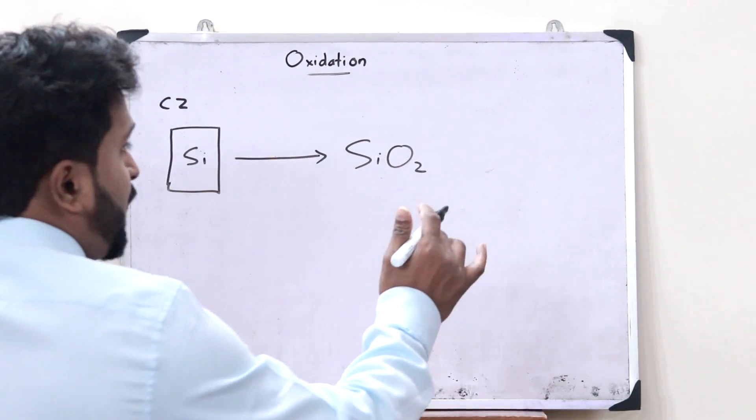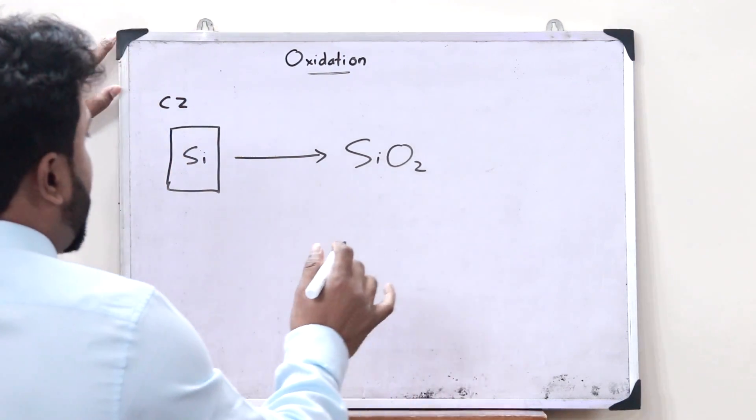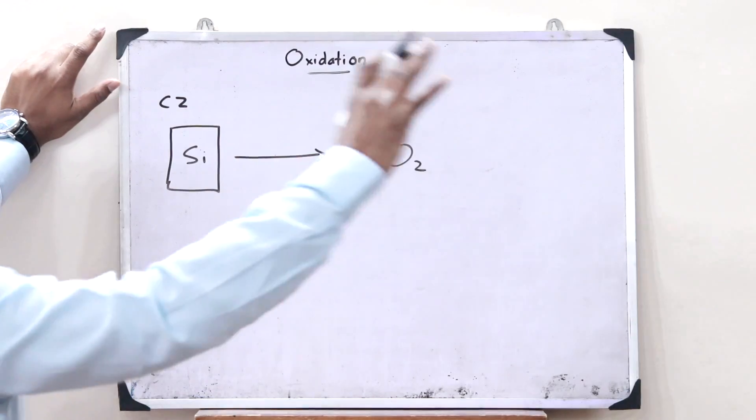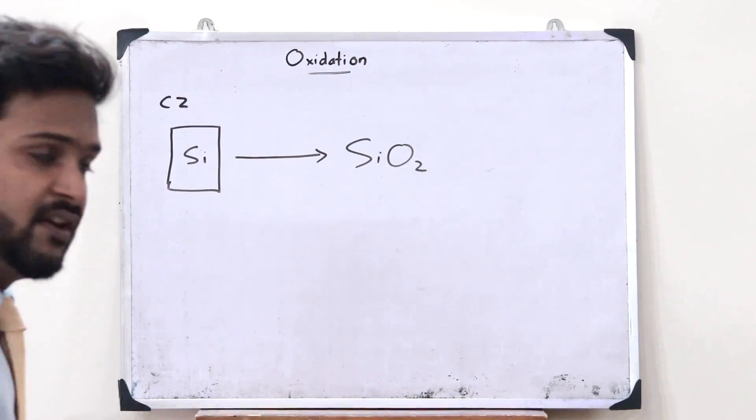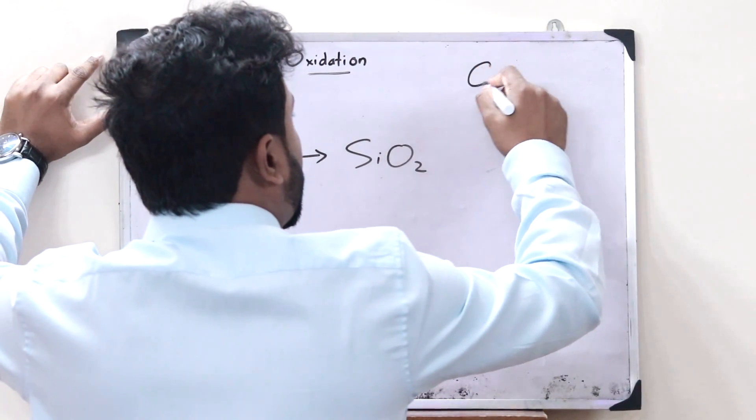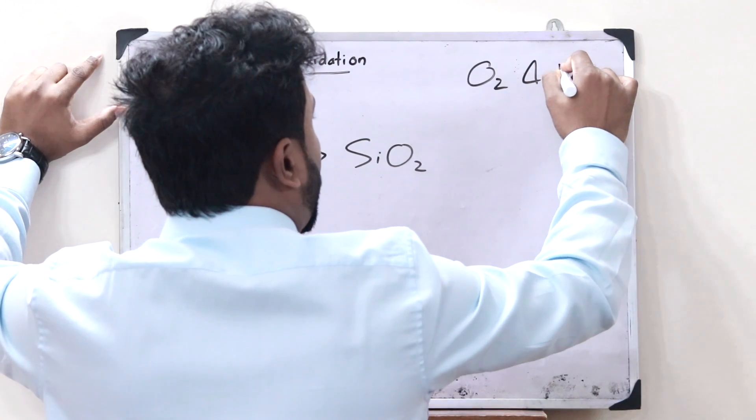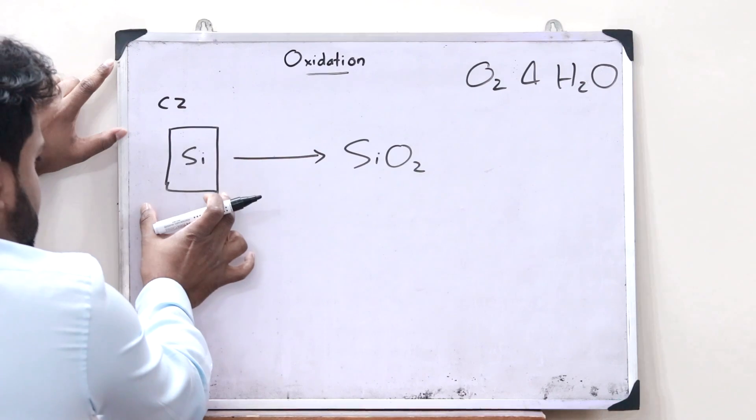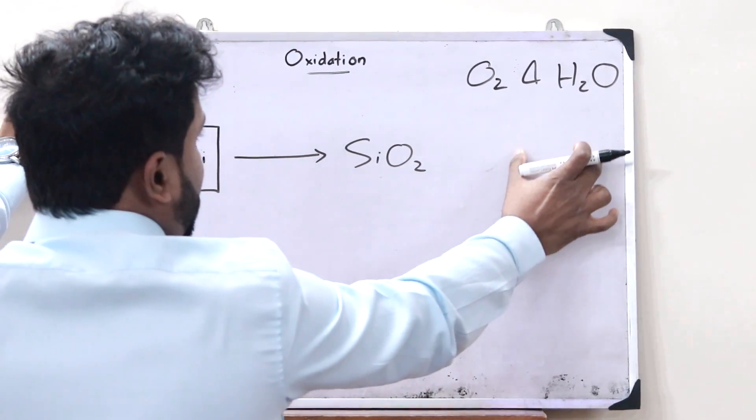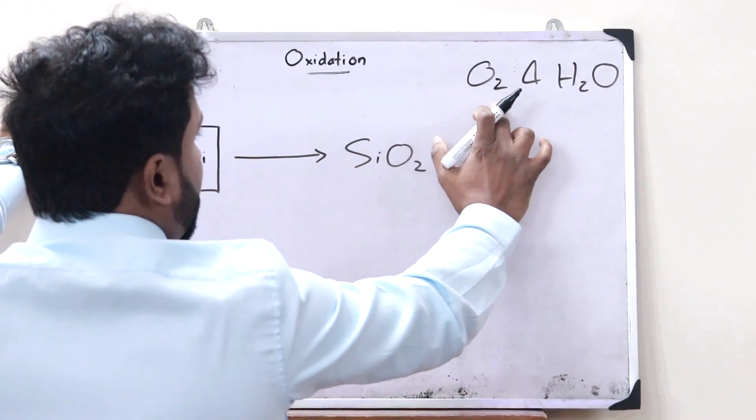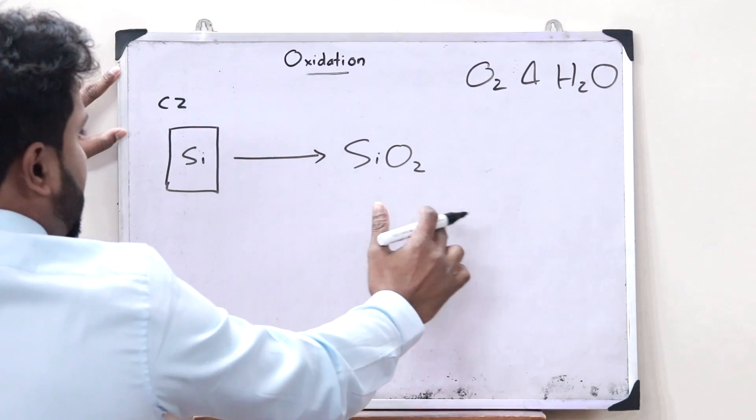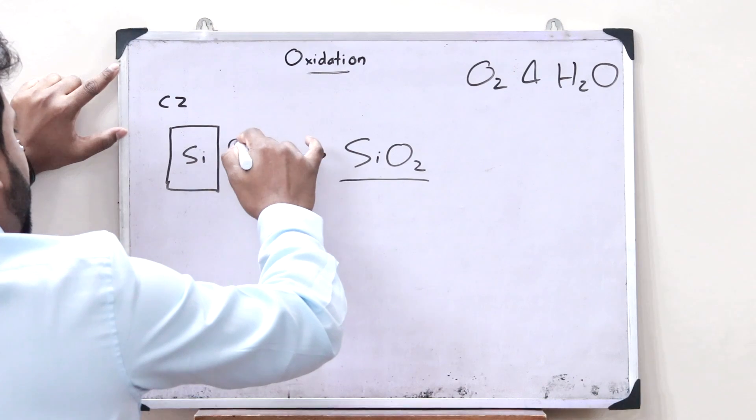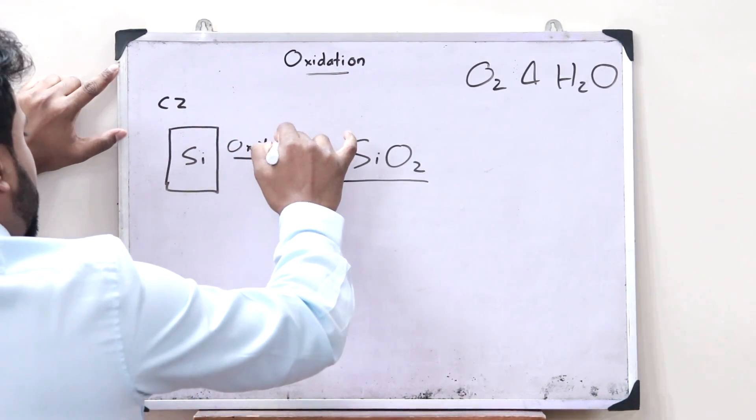The formation of this silicon dioxide is obtained by exposing the silicon wafer to an oxidizing environment consisting of oxygen, that is O2, and water, that is H2O. Therefore, by exposing this silicon wafer to an oxidizing environment of oxygen as well as H2O, we get silicon dioxide. This simple process is what you refer to as oxidation.